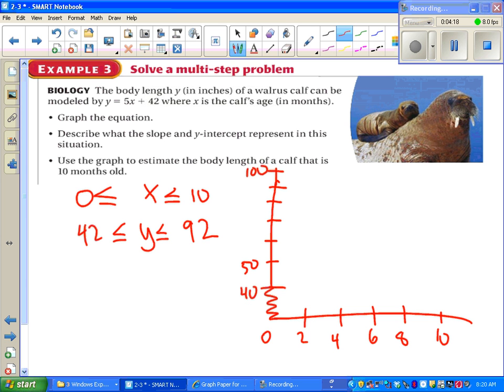And on my x-axis, I do start at zero. Now I can plot a couple points to get a line. When I plug in zero, I see that I get 42. When I plug in ten, I see that I get 92. And I can draw a line connecting them.